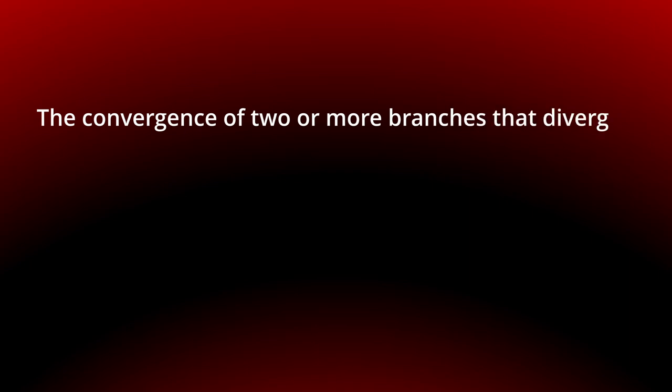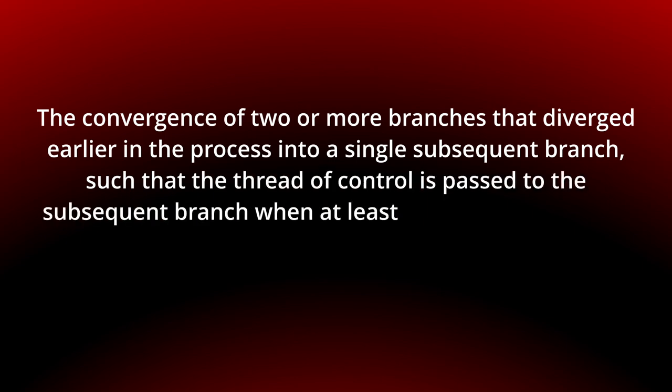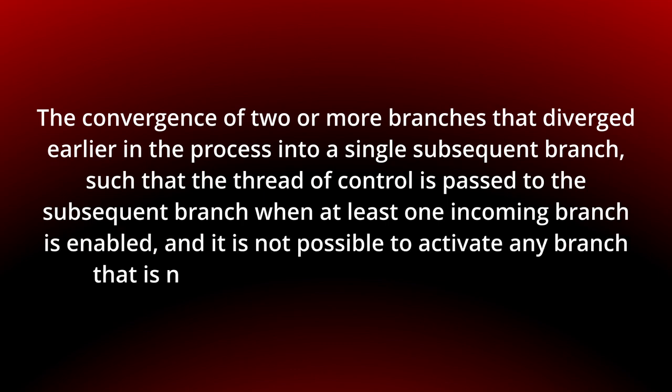Today we look at the general synchronizing merge pattern. The convergence of two or more branches that diverged earlier in the process into a single subsequent branch, such that the thread of control is passed to the subsequent branch when at least one incoming branch is enabled and it is not possible to activate any branch that is not yet activated at some future stage.